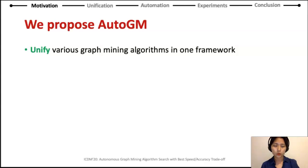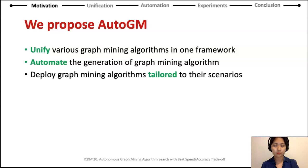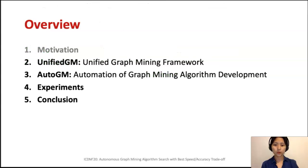In this paper, we propose AutoGM to cope with these problems for practitioners. We first unify various graph mining algorithms under one unified graph mining framework. Then we propose an automated system for graph mining algorithm development. This automated system will output the optimal graph mining algorithms tailored to the user's applications. This is the overview of today's talk: we introduce the unified graph mining framework, the novel automated system, experimental results, and our conclusion.